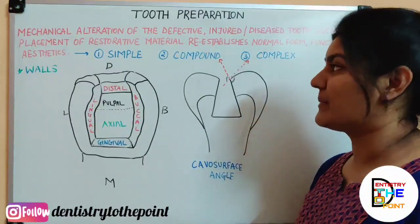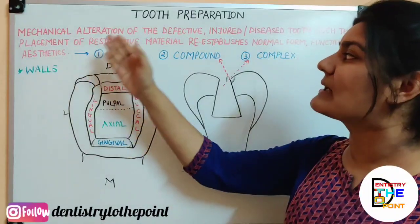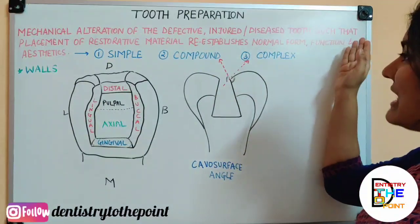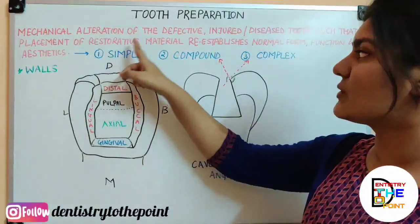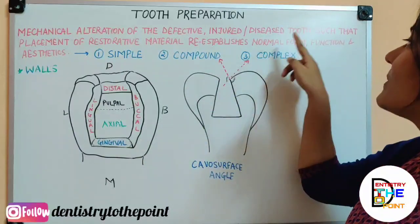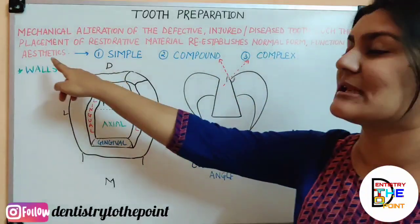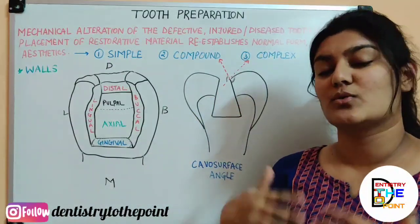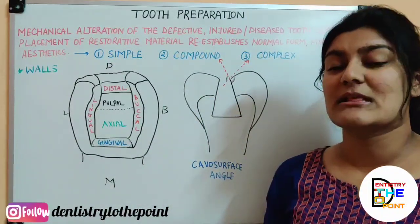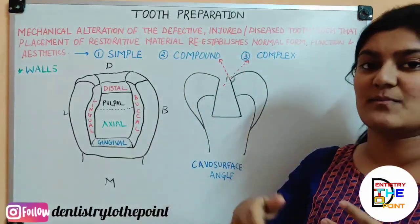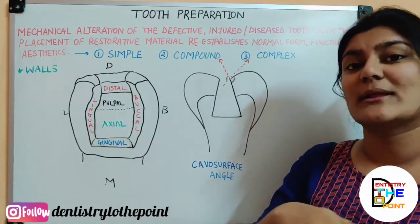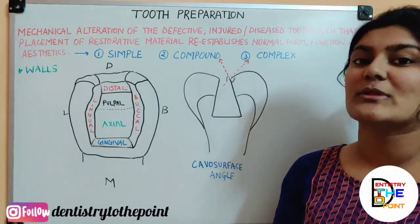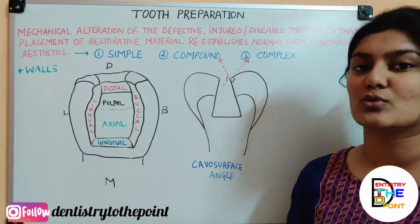So firstly, what is tooth preparation? It is the mechanical alteration of the defective, injured or diseased tooth such that placement of a restorative material re-establishes normal form, function and aesthetics where needed. Simply put, you alter or make changes in the defective or diseased part of the tooth — the area where there is a cavity — and you place a suitable restorative material so that normal form and function of the tooth is established.